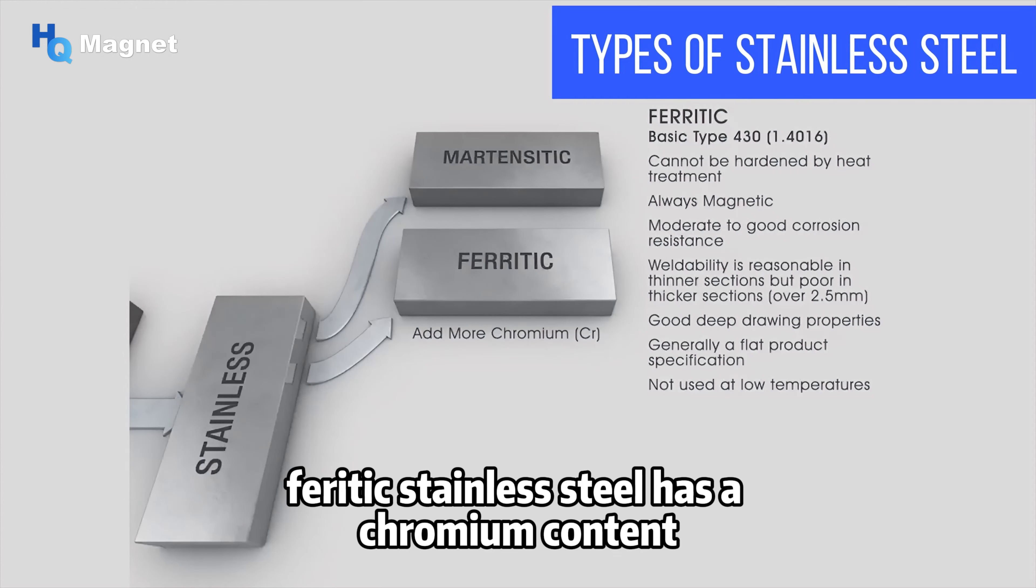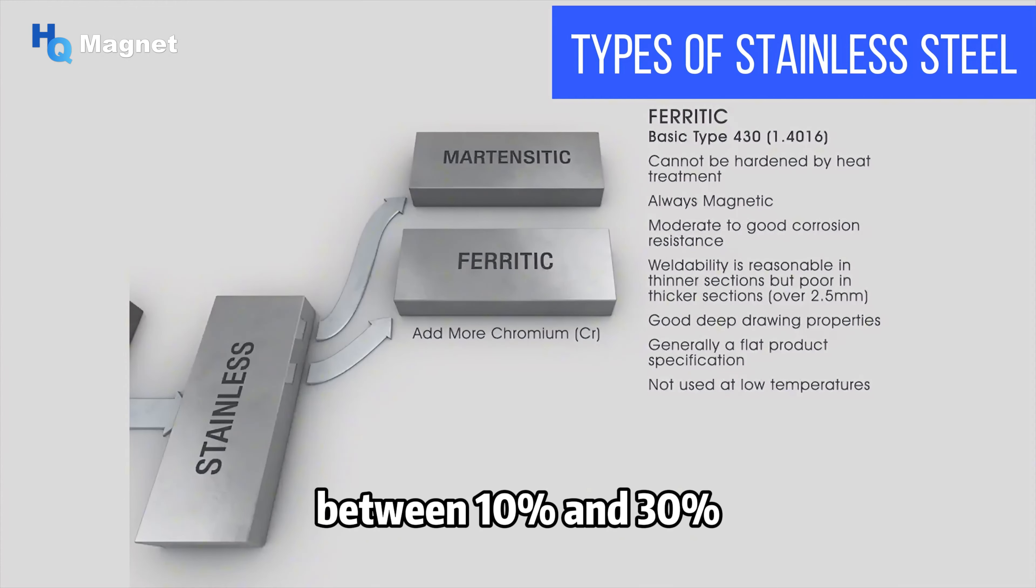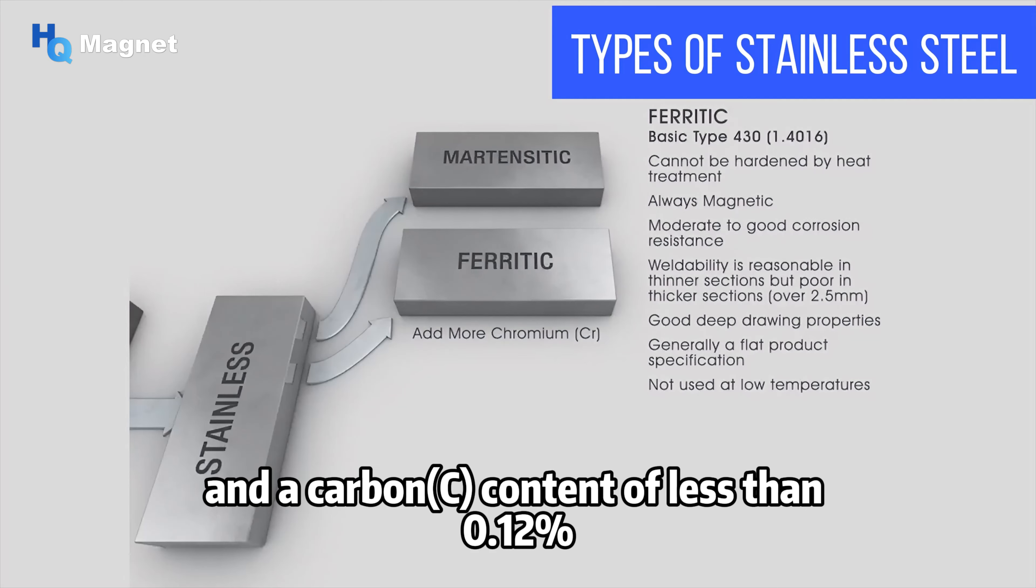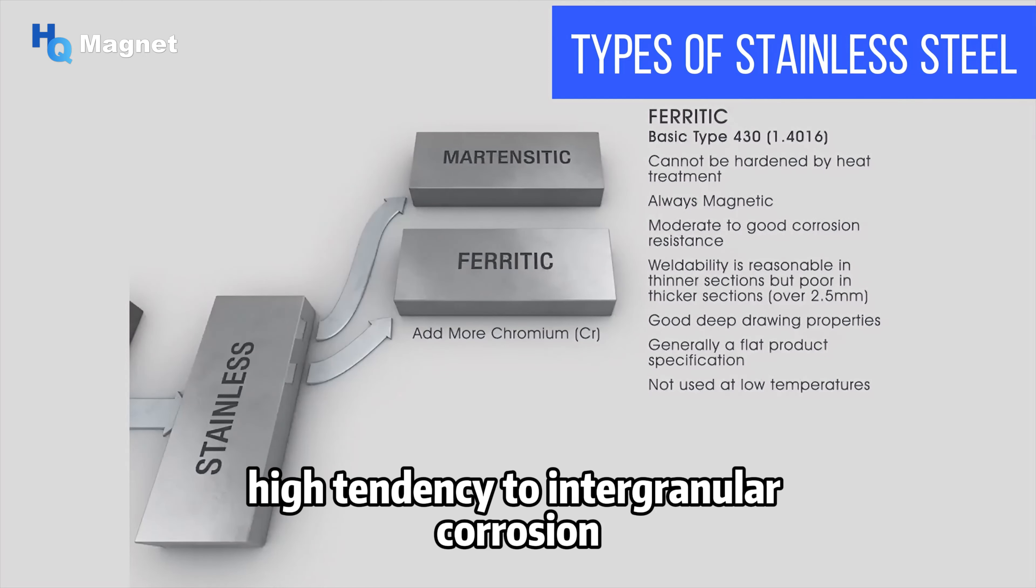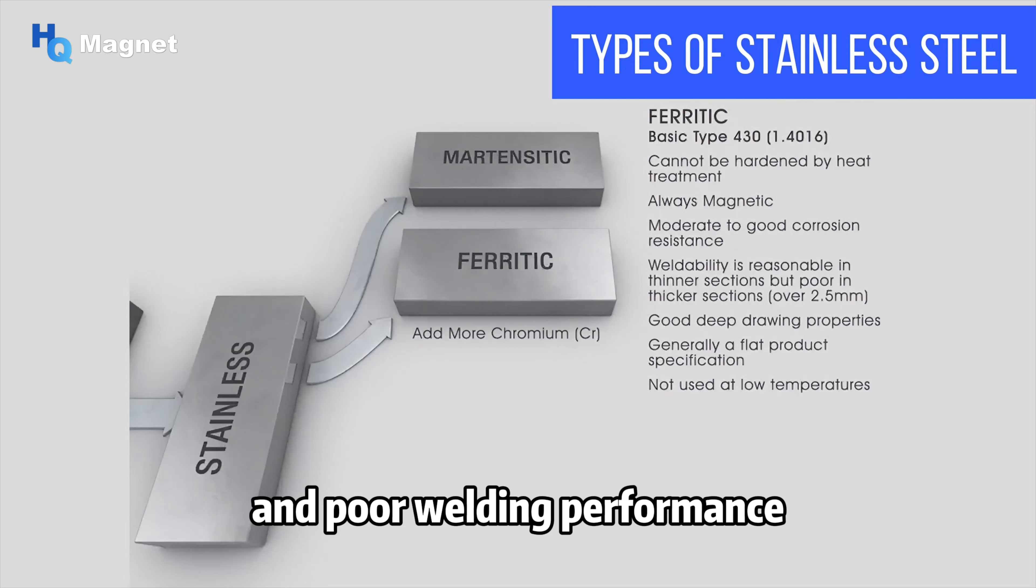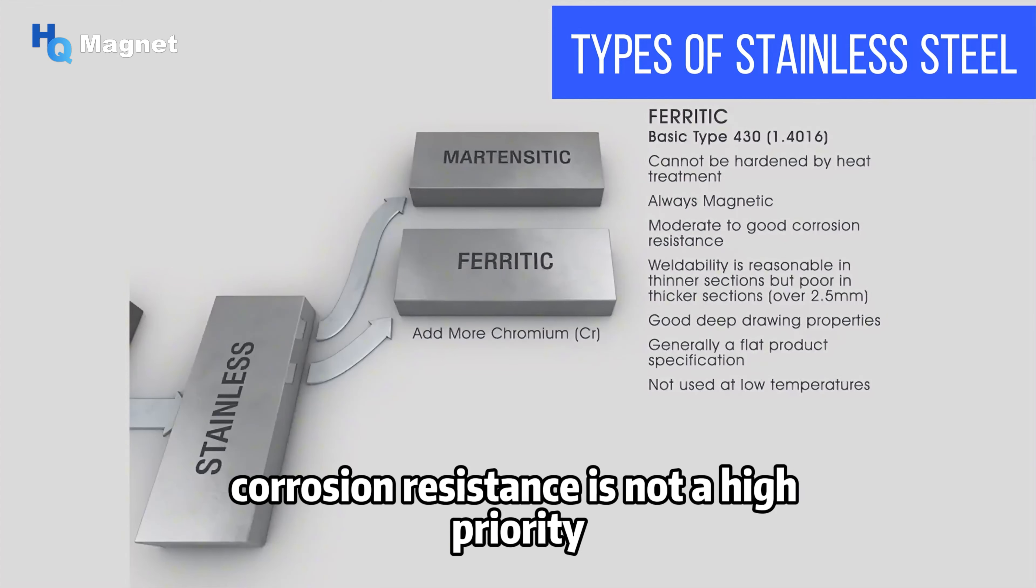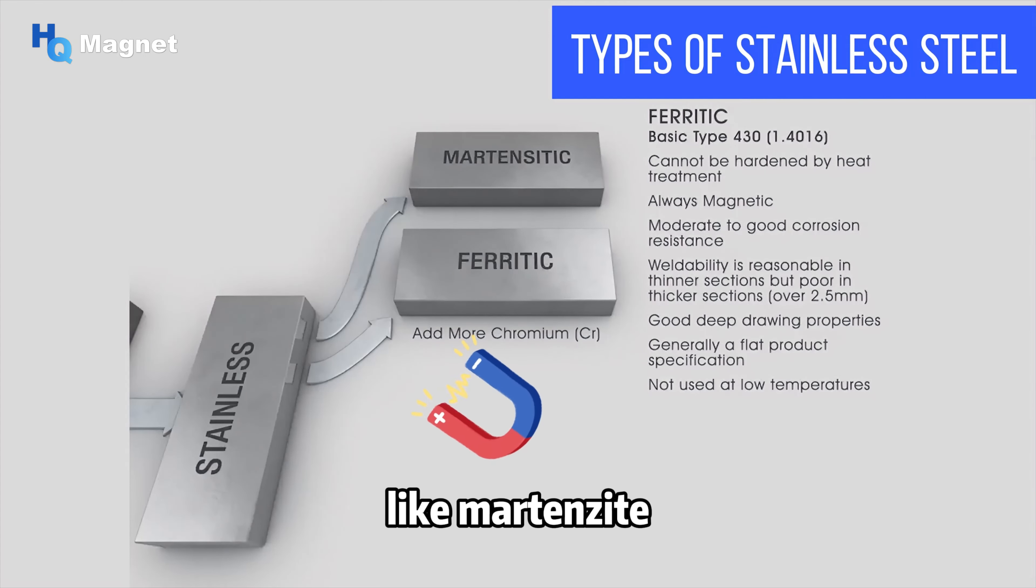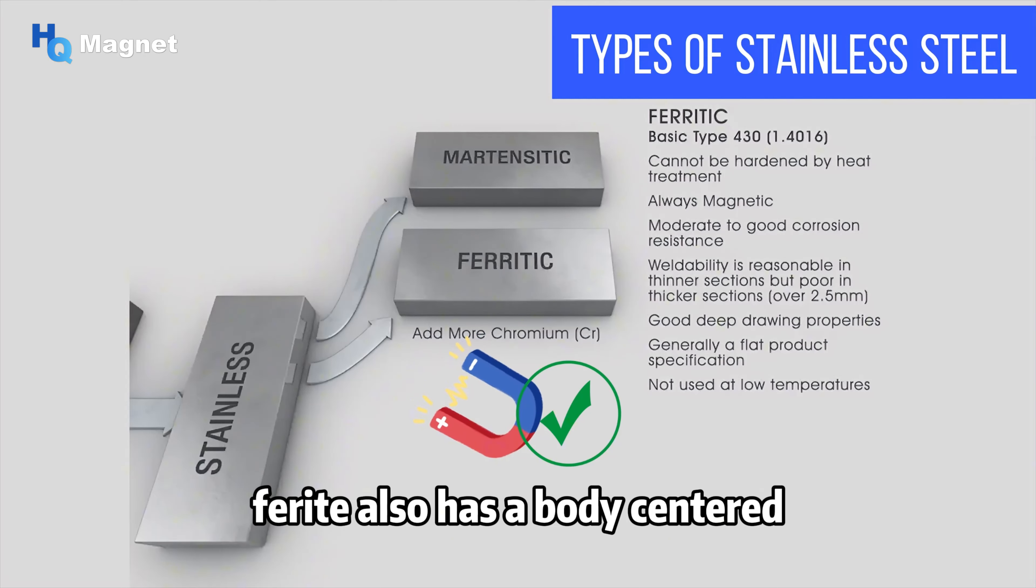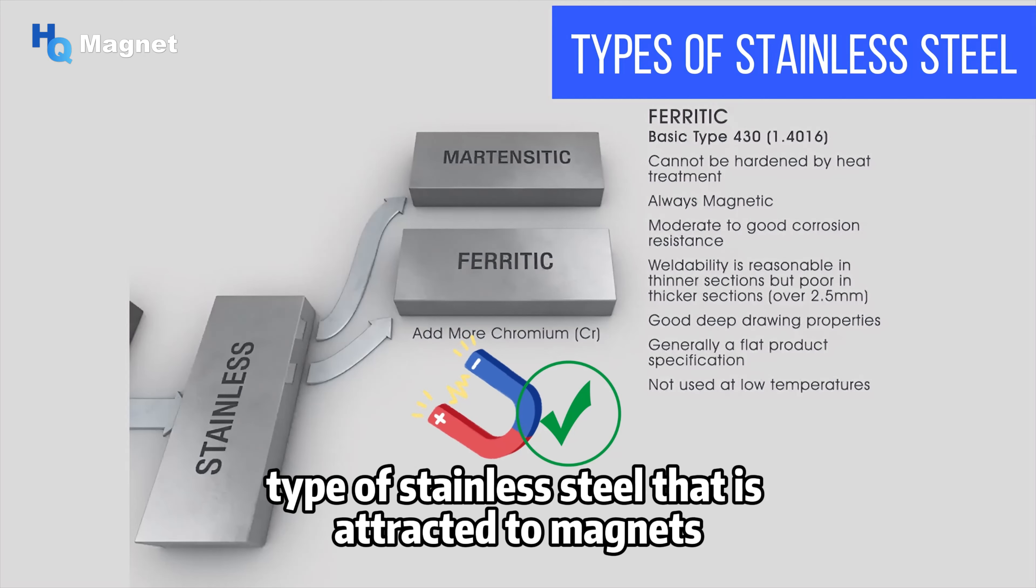Ferritic stainless steel has a chromium content between 10 and 30%, no nickel, and a carbon content of less than 0.12%. It has the disadvantages of high brittleness at low temperatures, high tendency to intergranular corrosion, and poor welding performance. It is typically used in areas where corrosion resistance is not a high priority, such as building materials and automotive parts. Like martensite, ferrite also has a body-centered cubic crystal structure, making it a type of stainless steel that is attracted to magnets.